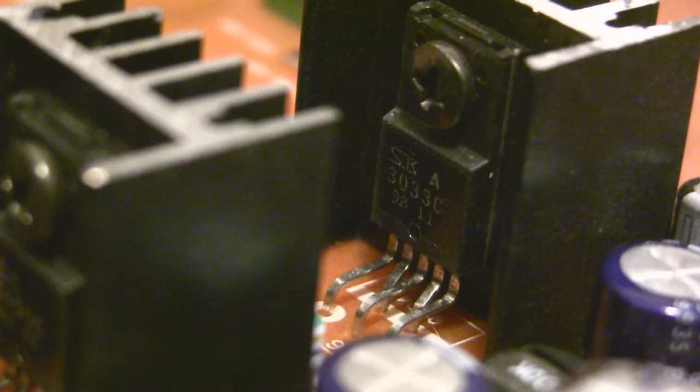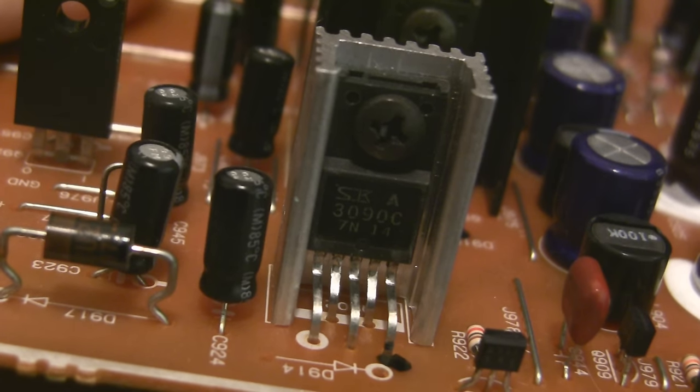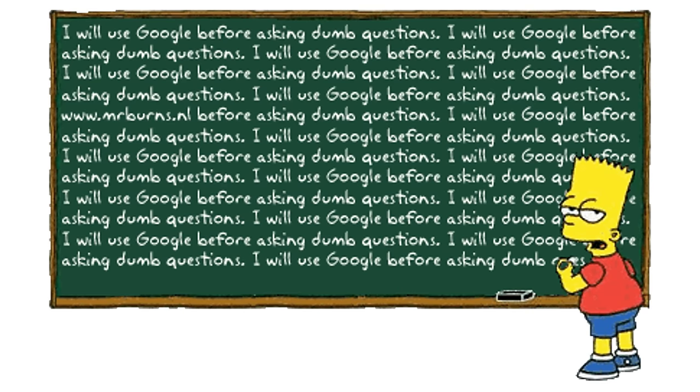Check it out, I found a 3.3 volt, 5 volt, 6 volt, and 9 volt regulator all on one PCB from an old DVD player. And I'm not going to lie, I didn't know these were all voltage regulators until I googled the part numbers written on them. As always with engineering, Google is your best friend.